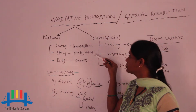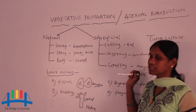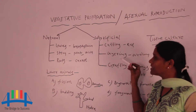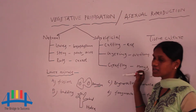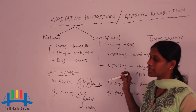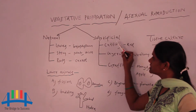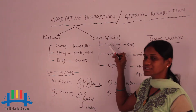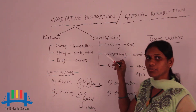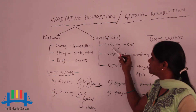Now let's look at the artificial way. There are commonly three types: cutting, layering, and grafting. These are artificial, meaning man-made methods.